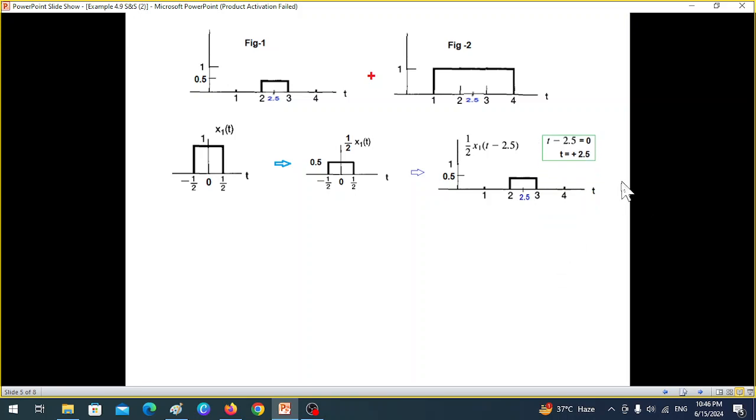And as I was mentioning, if there is any confusion whether we should write t plus 2.5 or minus 2.5, the best way is to put t minus 2.5 equals 0, therefore t equals 2.5. That means you have to move to plus 2.5 to get this value. Or if we move to plus 2.5, then our signal will be t minus 2.5.